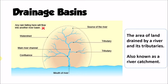In this video we're going to be examining the drainage basin hydrological cycle and thinking about the movement of water on a small scale within one individual drainage basin. A drainage basin is the area of land that is drained by a river and its tributaries. We can see several tributaries flowing down, joining together to form a main river channel, with water eventually flowing out to sea at the mouth of the river.